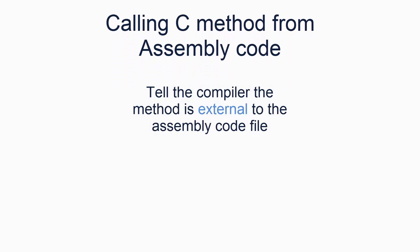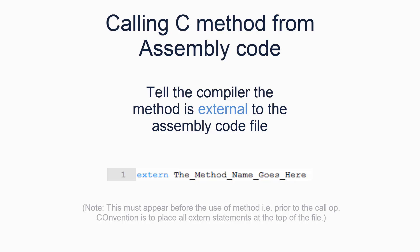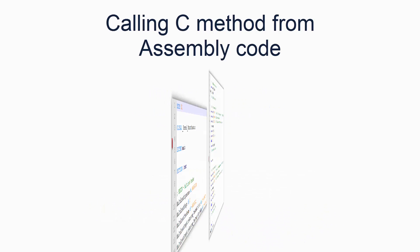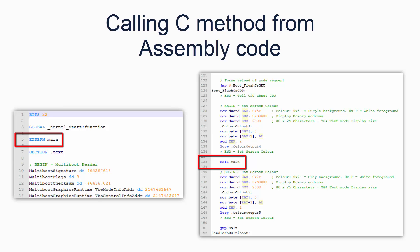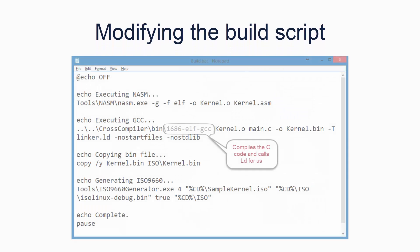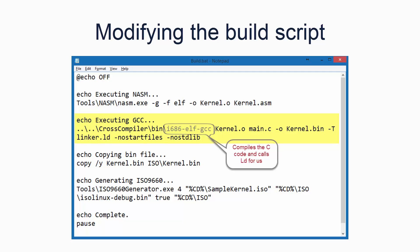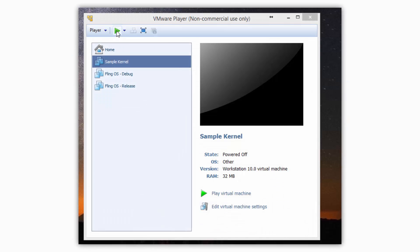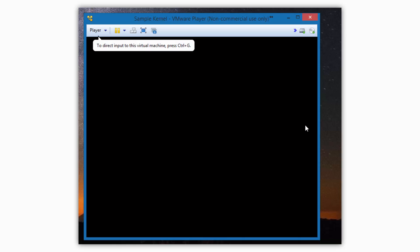The first step is to tell the compiler that the method we want to call exists outside of our assembly code file. We do this using the extern keyword like so: extern main. Now we just use the call operation in our assembly code to call the method. The compiler knows it is external, so it will put a placeholder in the machine code. We will look later at how to use the linker to produce our final operating system binary file. The call should be placed immediately after our existing initialization code. We'll now modify our build script to include the steps for compiling the C code and for linking it all together. We will be linking the code using a program called LD. Go ahead and test it all to make sure it all works, remembering to recompile first. You should see the colour from our C method outputted to the screen.